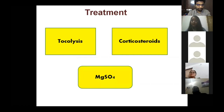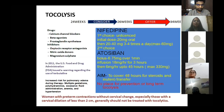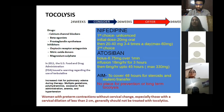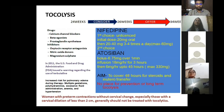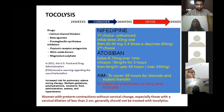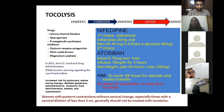Treatment modalities are tocolysis, corticosteroids, and magnesium sulfate. For tocolysis, you can consider it based on available NICU facilities, and must offer it after 26 weeks. The first-choice drug is nifedipine — 20 mg initial dose, maximum 60 mg per day — given orally. The second drug is atosiban: 6.75 mg bolus over one minute, then 18 mg/hour for three hours, then 6 mg/hour for the next 45 hours, totaling 48 hours with a maximum dose of 330 mg.